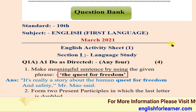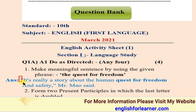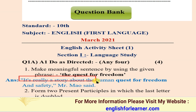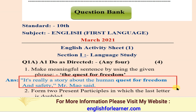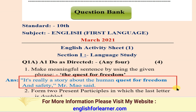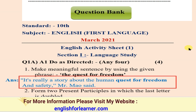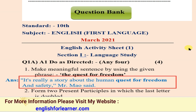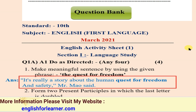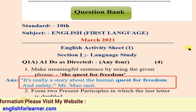Let's see the answer using the phrase 'the quest for freedom.' Example: 'It's really a story about the human quest for freedom and safety,' Mr. Mao said. Another example: 'Our freedom fighters sacrificed their lives for the quest for freedom.' This is the type of sentence we can construct.